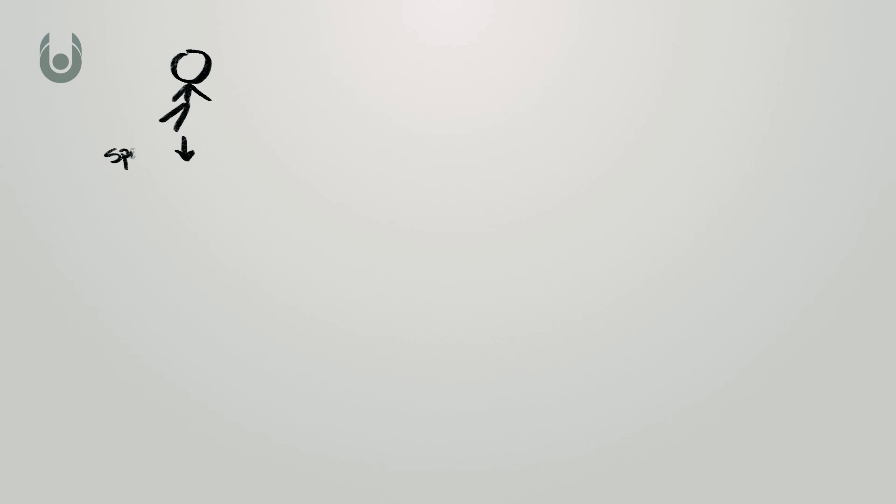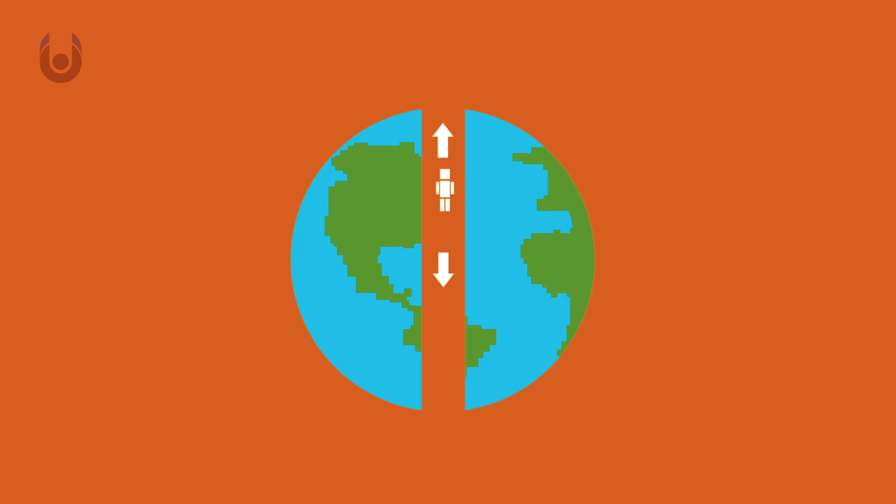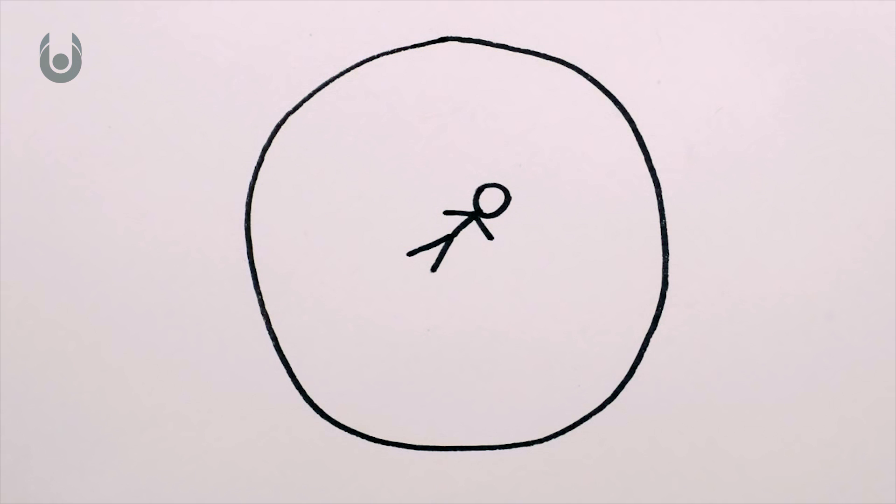However, this is not taking into consideration the terminal velocity that you would reach as you jumped into the hole and started falling towards the core. As you fall, your speed would keep increasing, but only at the beginning of your jump than as you approach the center because the amount of gravitational force pulling on you is decreasing.